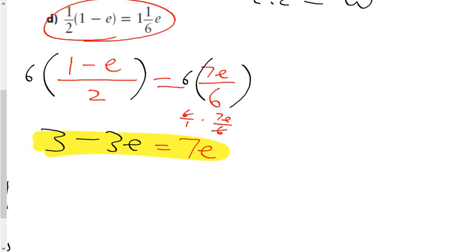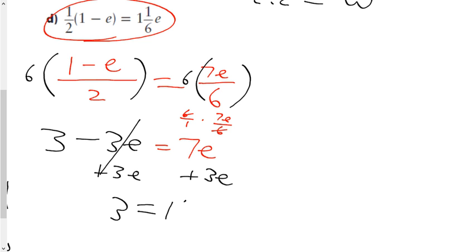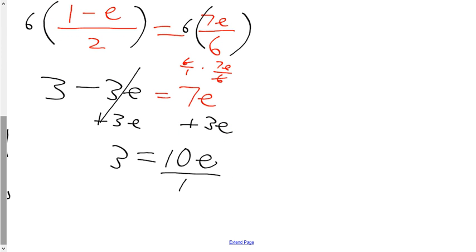By multiplying both sides by 6, I've created an infinitely easier equation: 3 minus 3e equals 7e, no fractions. I add 3e to both sides to combine the variable terms, giving 3 equals 10e. Dividing both sides by the coefficient, e equals 3 over 10, or three tenths.